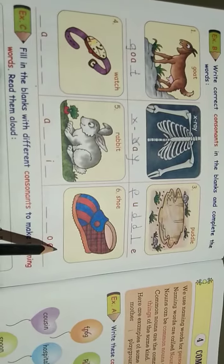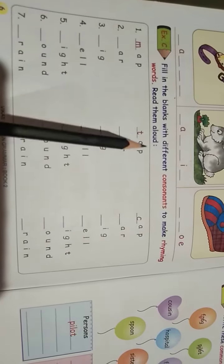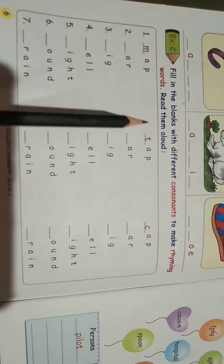Here in next question, observe. Fill in the blanks with different consonants to make rhyming words. Read them aloud and write also.